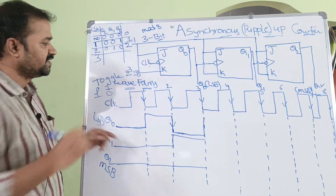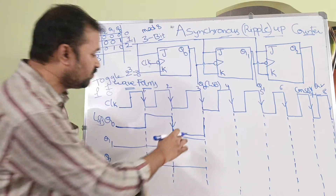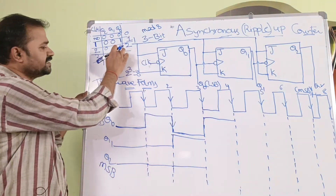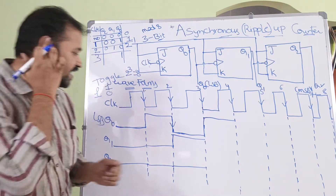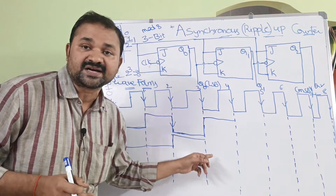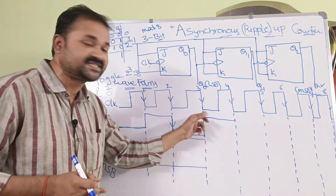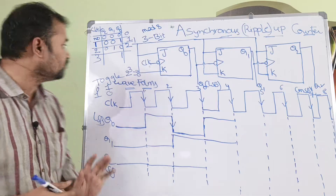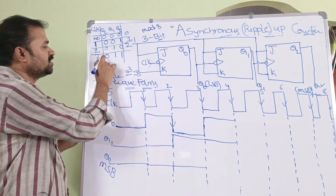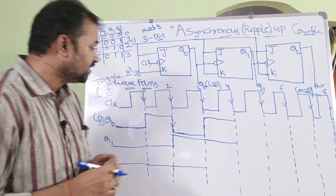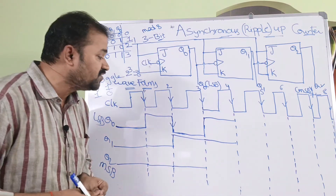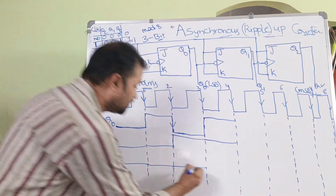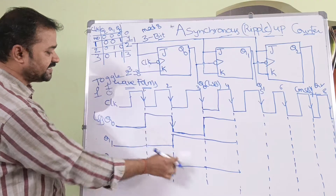Now let us apply the third clock pulse. At the falling edge, Q0 goes from low to high — it is toggled. Q1 works at the falling edge of Q0. But this transition is a rising edge, not a falling edge. So there is no change in Q1; it remains 1. For Q2, we did not get a falling edge of Q1 either, so Q2 stays 0. The output is Q2=0, Q1=1, Q0=1 — which is 011, decimal 3.